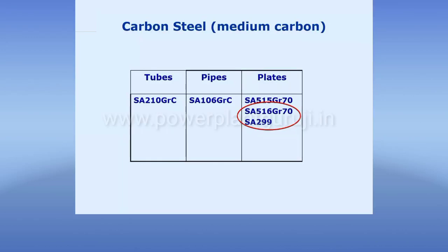The problem with carbon steel metallurgy is we can only use carbon steel where the temperature is less than 400 degrees centigrade, because the moment the temperature exceeds 370 degrees centigrade and nears 400 degrees centigrade, a particular problem starts in the component which is under pressure and temperature — that is called CRIP. Carbon steel does not have any significant strength against CRIP, so we need to add some alloying elements which can increase its strength against CRIP.